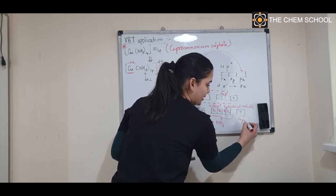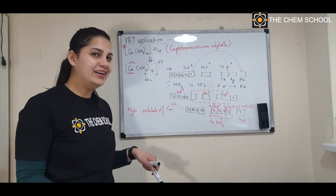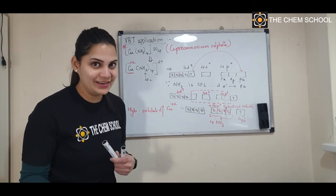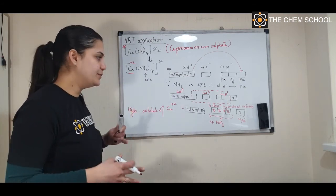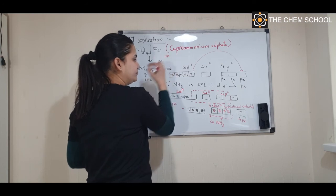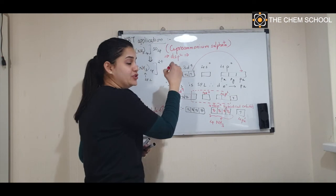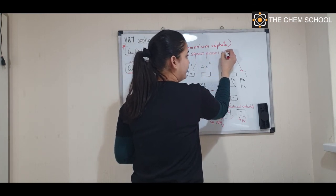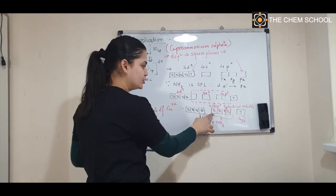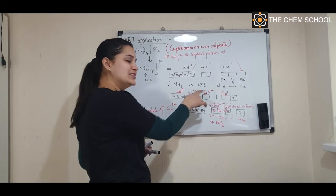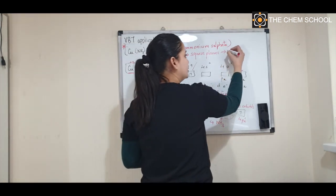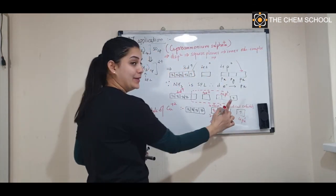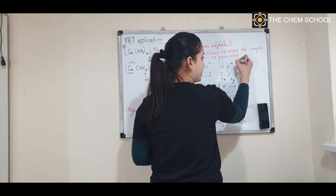The 4pz orbital retains its one electron (4pz¹) and remains unhybridized. The hybridization is dsp², so the geometry of the complex is square planar. Since the d orbital used is 3d = (n−1)d (with n = 4 from 4s), this is an inner orbital complex. One unpaired electron is present, therefore the complex is paramagnetic and colored.